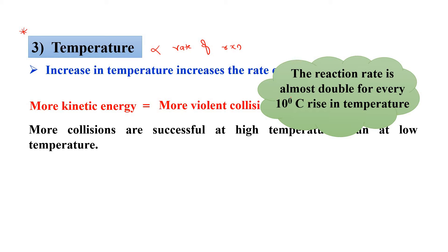When you increase temperature by 10 degree Celsius, for every 10 degree Celsius, the rate of reaction almost becomes double. For example, if the rate of reaction dx/dt is 2 × 10⁻² at 10 degree Celsius, then when you increase to 20 degree Celsius, it becomes 2 × 0.2 × 10⁻². That means for every 10 degree Celsius, it becomes double. This is the effect of temperature.